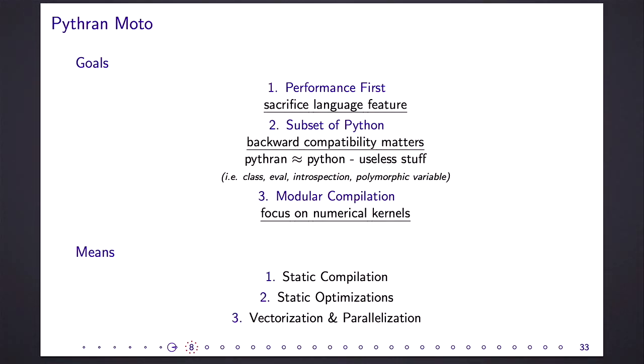So our goals: performance first. We sacrifice some language features. We only handle a subset of Python. And the things that we don't handle are just useless stuff. Nobody uses it, I guess. Classes, eval, introspection, polymorphic variables. Backward compatibility matters. So we don't change Python. It's pure Python. It stays compatible when you write code for Pythran, it stays compatible with Python. This is important because it means your code won't be specialized for Pythran. You can still use it normally. And there is no exit cost or entry cost for Pythran. The entry cost is low, the exit cost is none.